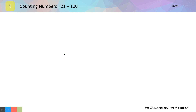You saw a lot of numbers. Now let us find out the number of 10s and 1s in any two-digit number. In any two-digit number, the number you see on the right hand side will always go at the 1s place, and the number you see on the left hand side will go at the 10s place.